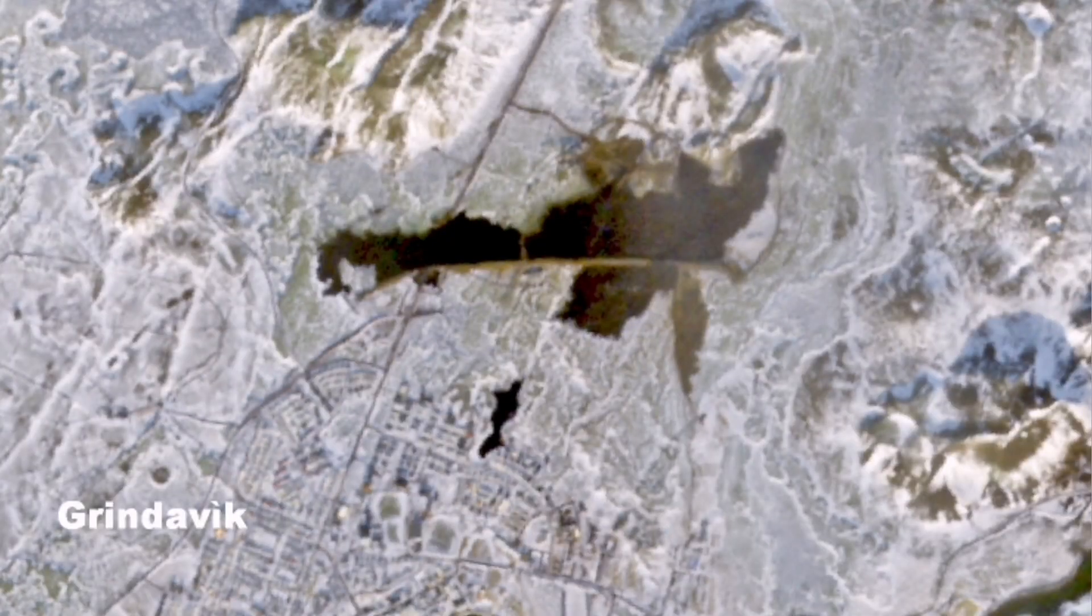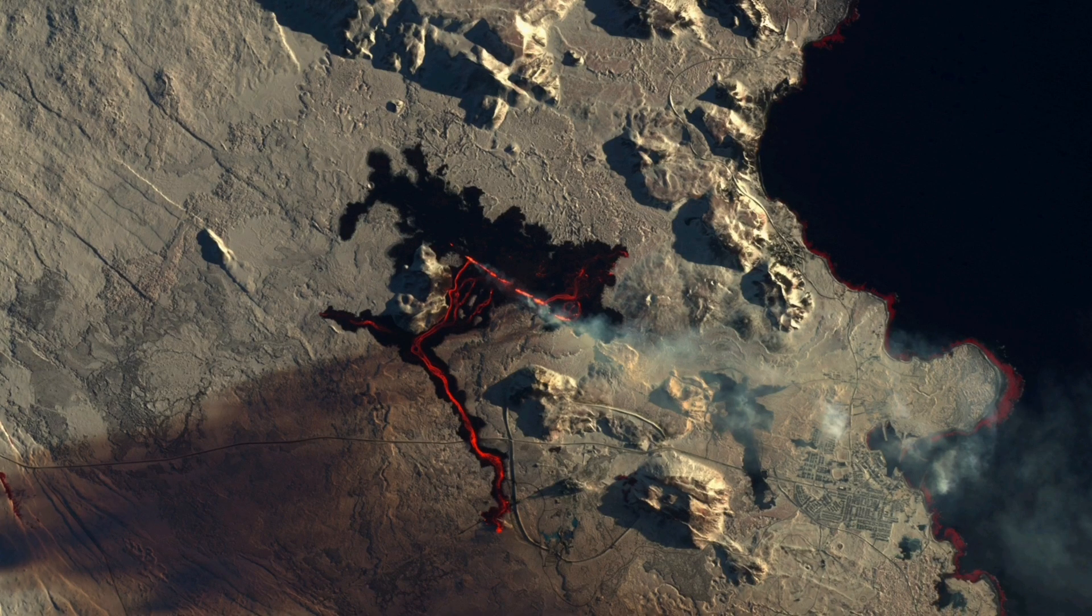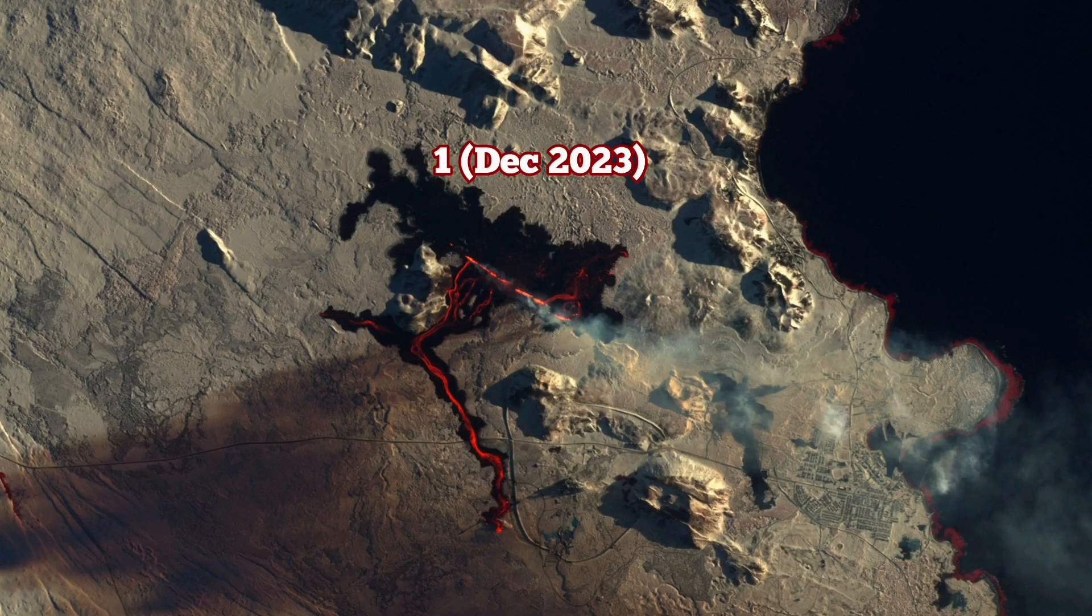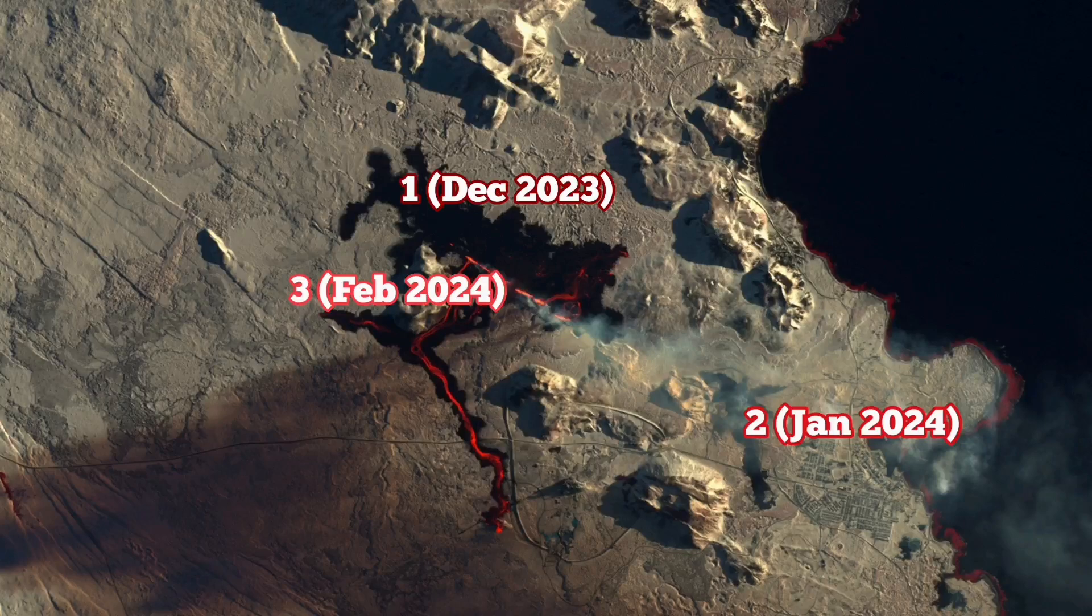We saw that in the sill and dike that erupted in Grindavik itself. We had the first line cutting through, slicing through the defense, then another part coming and invading the town, the north part of Grindavik, causing some harm and burning of a few houses. We had the first in December 2023, the second one in January in the Grindavik area, then the February one.